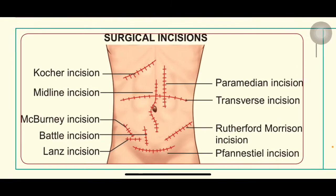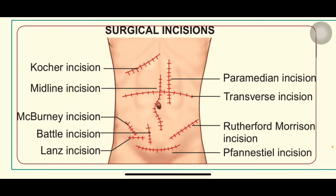First we will see the surgical incision types. Learn surgical incisions from up to down and right to left. First is the Kocher's incision, which is present in the right hypochondrial region along the rib line. Next is the transverse incision in the upper abdomen, then the midline incision, which is mostly used for laparotomies, and then the paramedian incision, which is in a paramedian position to the midline.